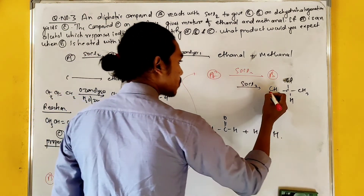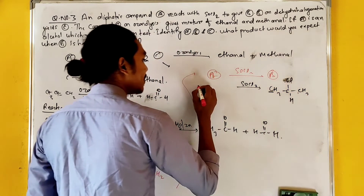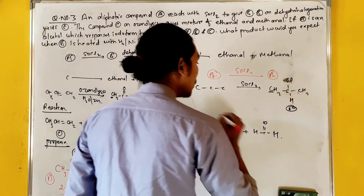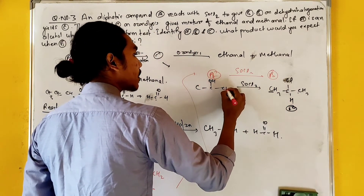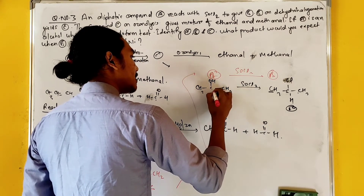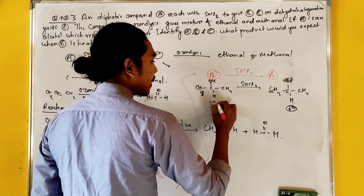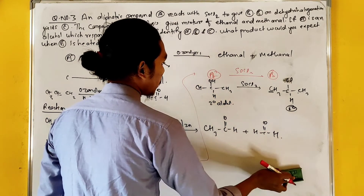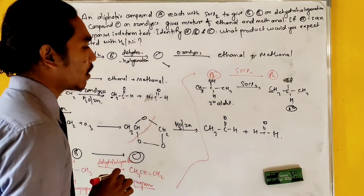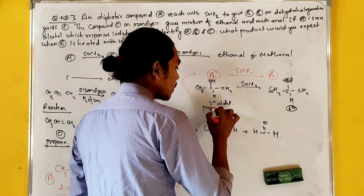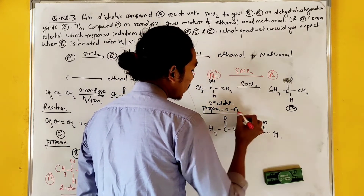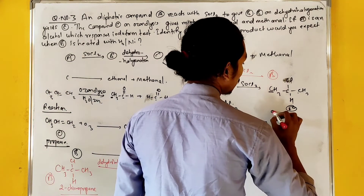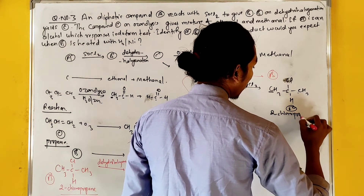So what is the second degree of alcohol? That means carbon is primary and secondary. This is the second degree of alcohol — propan-2-ol. This is a secondary alcohol, which with SOCl2 gives 2-chloropropane.